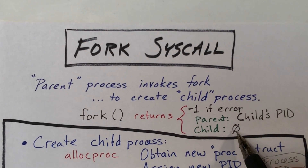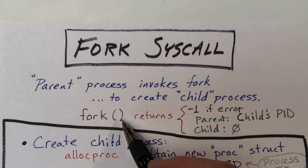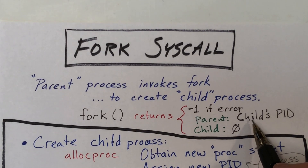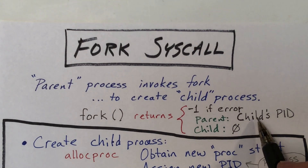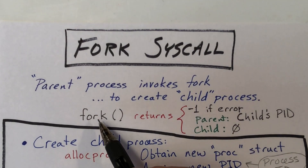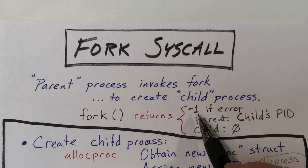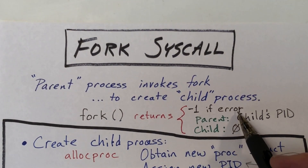The code in both processes, the parent and the child, will typically take a look at the return value, and that code can then determine whether it is running in the child or the parent process, and can take actions differently depending on whether it needs to behave as a child or a parent. If there is any difficulty — such as running out of memory and being unable to allocate the pages for the child — the fork system call will return minus one in the parent.